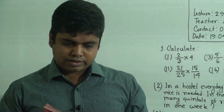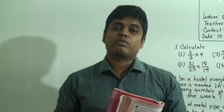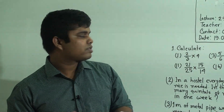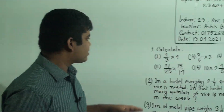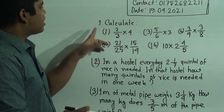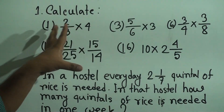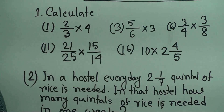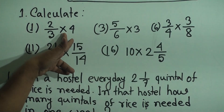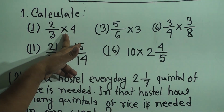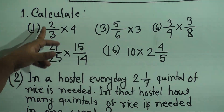My dear students, please open your math book to page number 63. From that page we shall solve question numbers 1, 2, and 3. I have already written the questions on the board, so please follow the board. Here, question number 1 says 'calculate' — that means some expressions are given and we do calculation. Here, multiplication means we do multiplication of fractions.